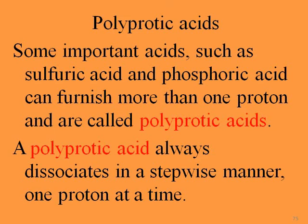Welcome to my channel. This video I want to talk about polyprotic acids. Polyprotic acids are those acids that have more than one proton to lose — it means the number of protons that an acid can lose. Some important acids such as sulfuric acid and phosphoric acid can furnish more than one proton and are called polyprotic acids.